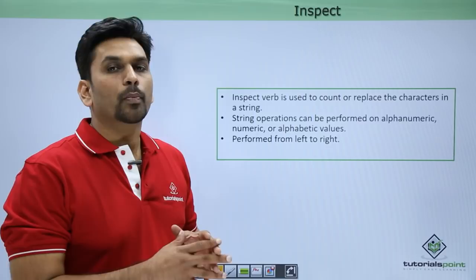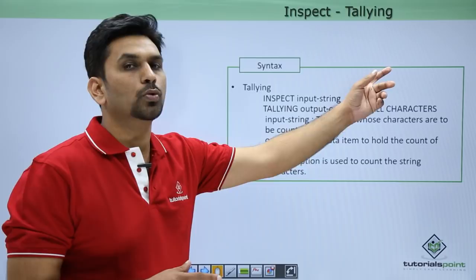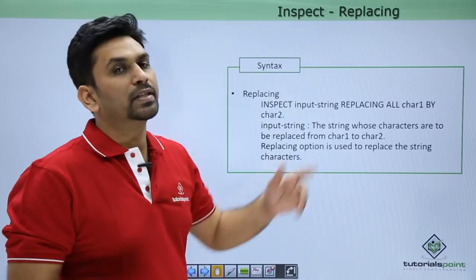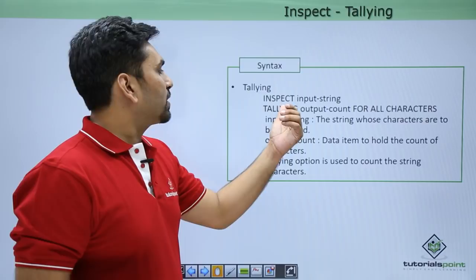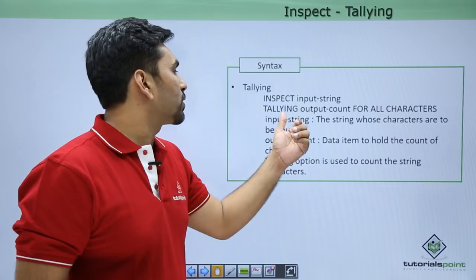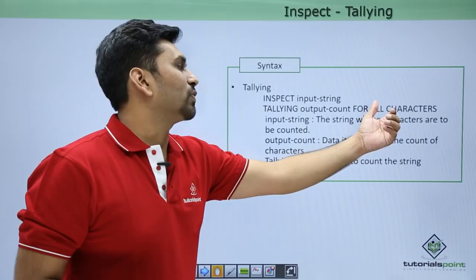INSPECT operations are performed from left to right. There are two types of INSPECT statements: TALLYING, which is used to count the number of characters in a string, and REPLACING, which is used to replace the characters. For TALLYING, the syntax is: INSPECT input-string TALLYING output-count FOR ALL characters. It will inspect the input string and count all the characters, putting the result in the count variable.